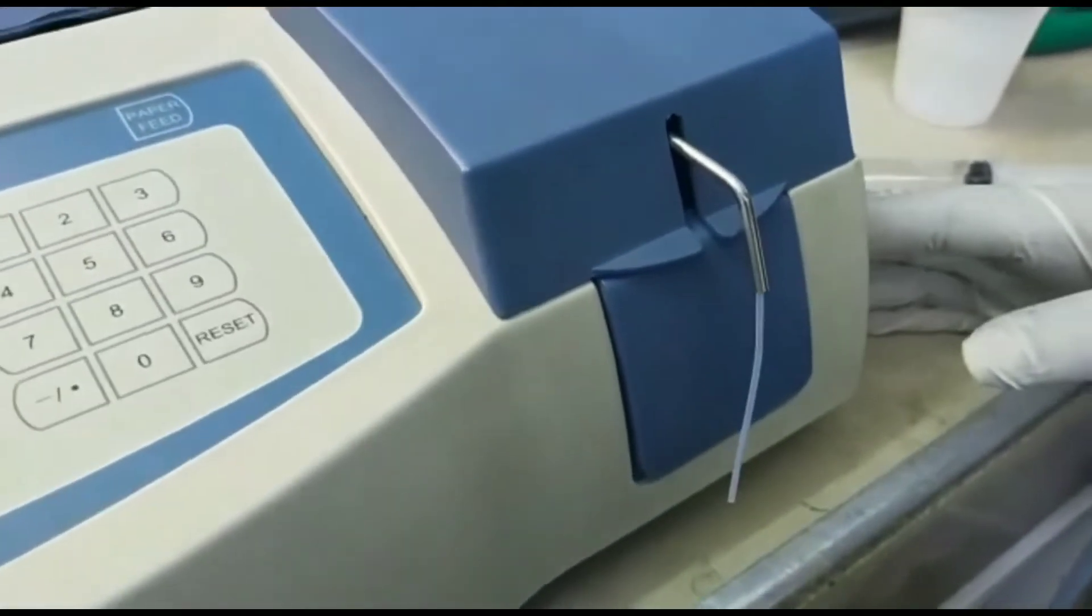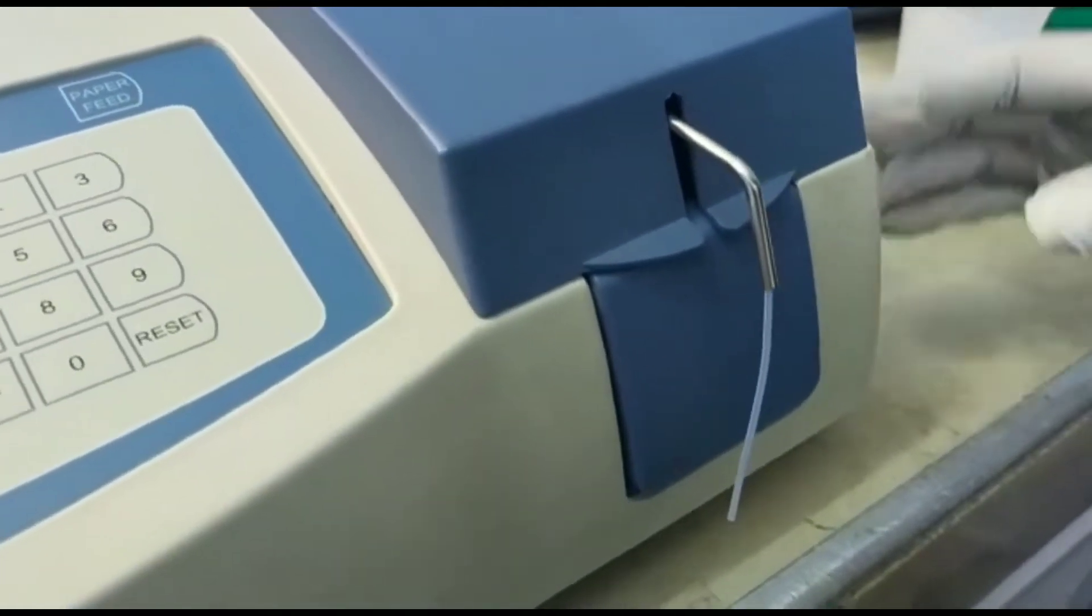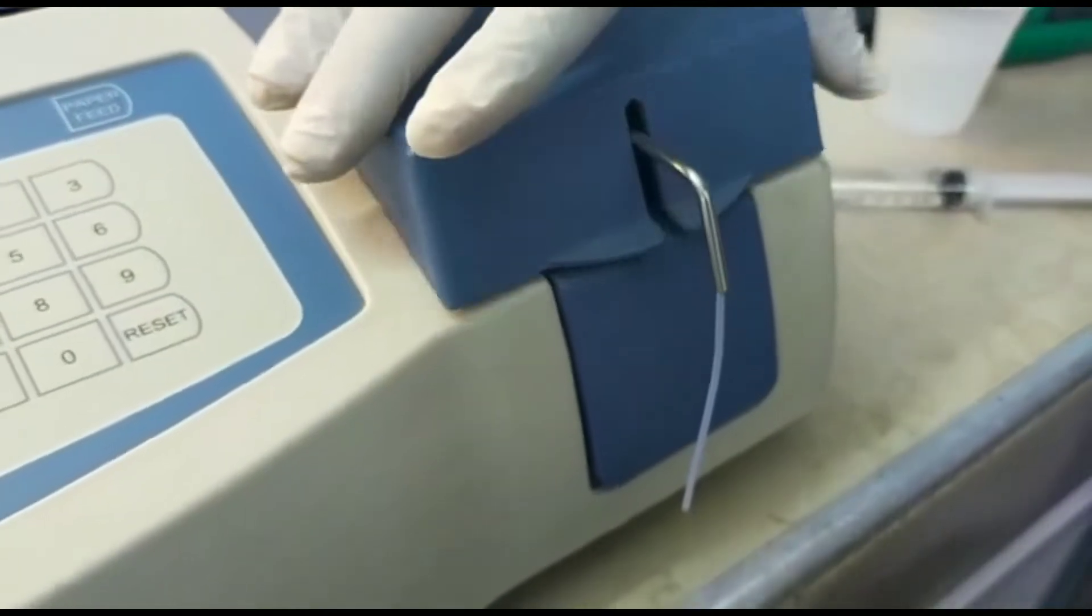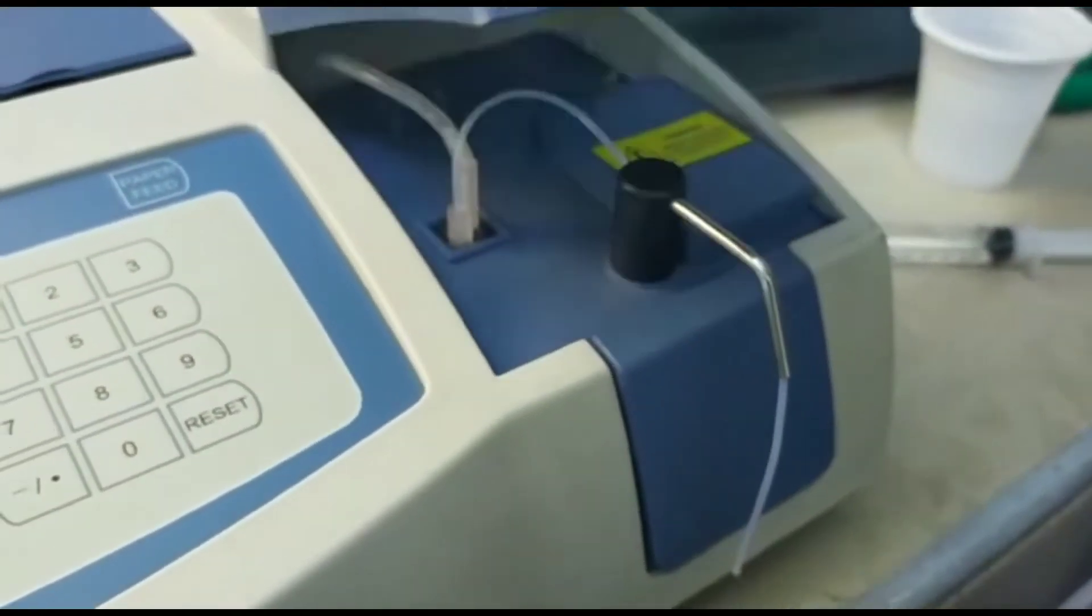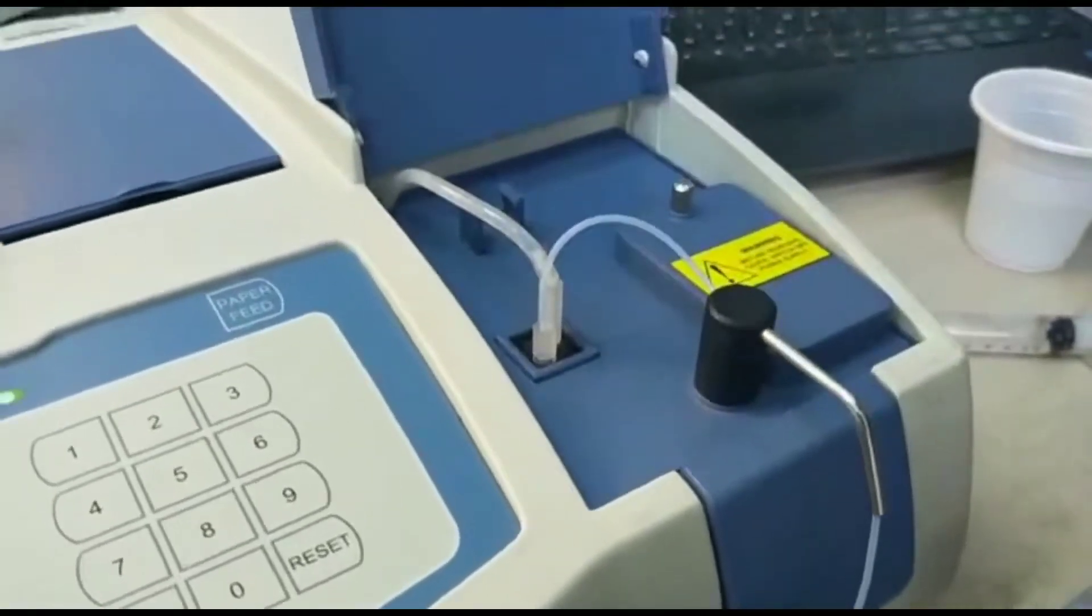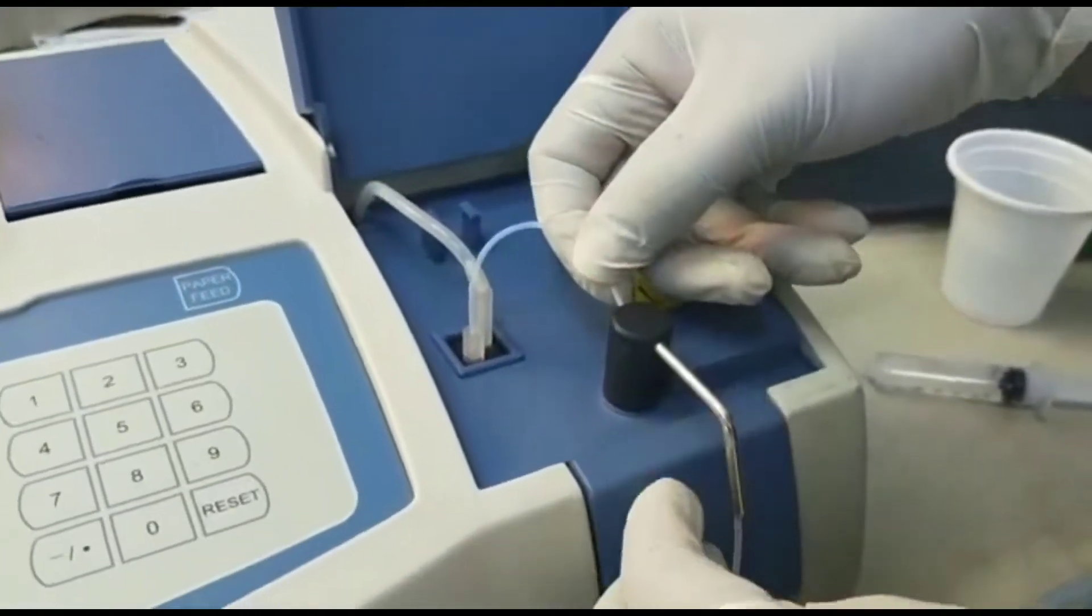Sometimes the flow cell gets blocked so you need to clean the flow cell. To clean it you need to open the cover which is on the right hand side. You open the cover,